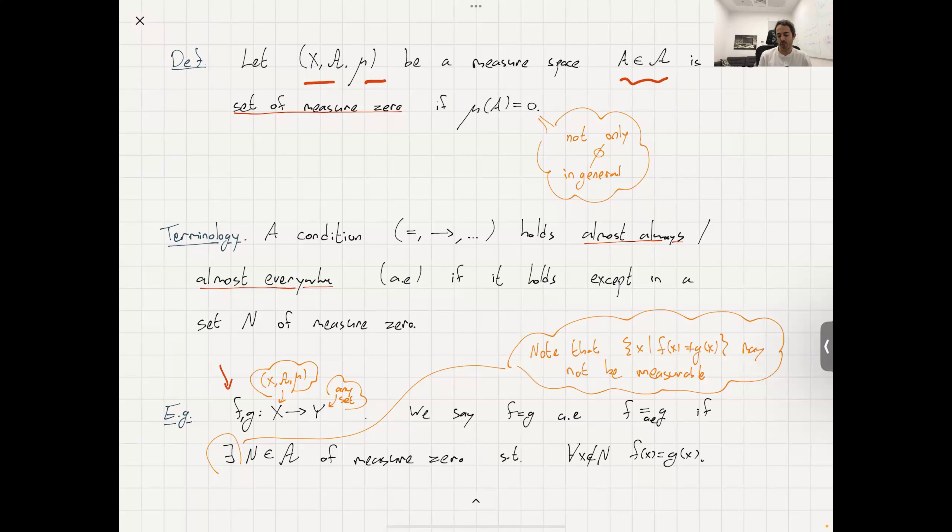We say that F equals G almost everywhere, and write it like that, or sometimes even put the AE below the equality sign. If there exists a set, a measurable set, a set of measure zero - it's going to live in X, a subset of X - such that outside of N (N is for not equal), the functions are equal.